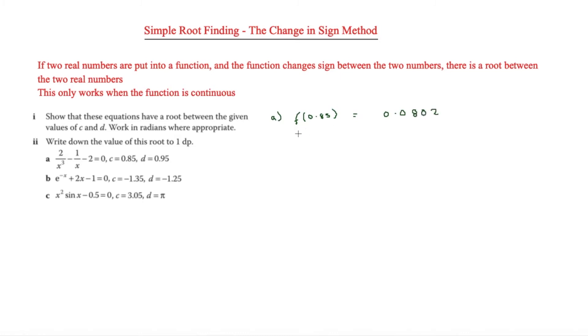Then we're going to put 0.95 in. This time we write 2 over 0.95 cubed minus 1 over 0.95 minus 2, and that gives us minus 0.71993. Now as we can see there is a change of sign between these two values. Therefore, there is a change of sign, so there is going to be a root.